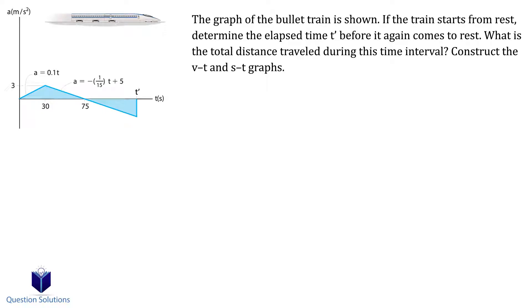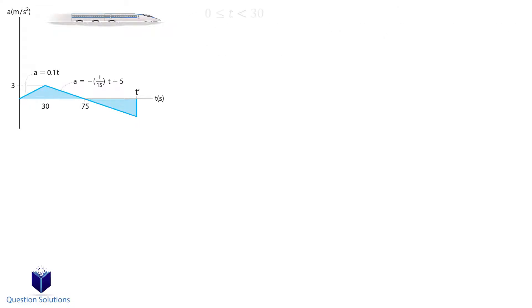This question is asking us to find the time the train took to come to a complete stop after it started from rest, and it also wants us to draw the velocity-time graph and the displacement-time graph. Let's write down the equations of each segment between 0 and 30 seconds and then 30 seconds and t prime. The equations are given to us so that makes this just a tad bit easier.